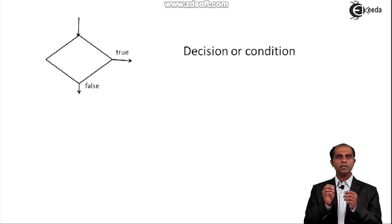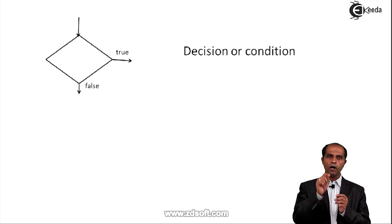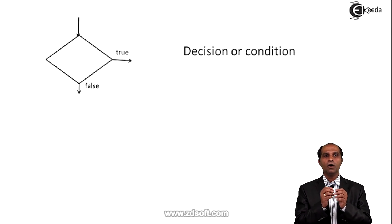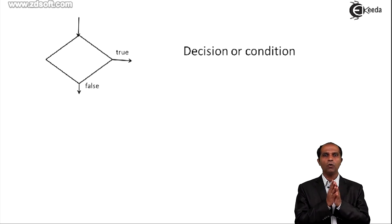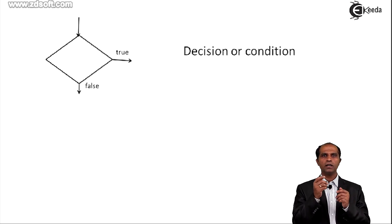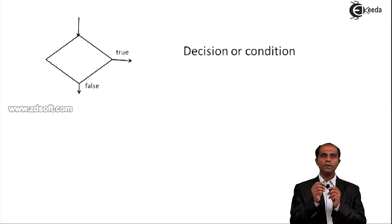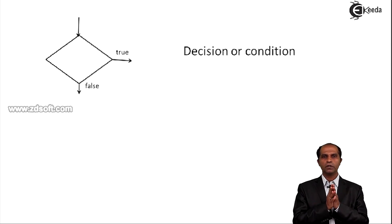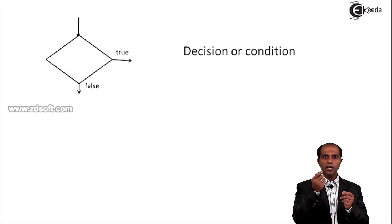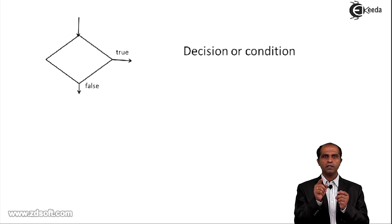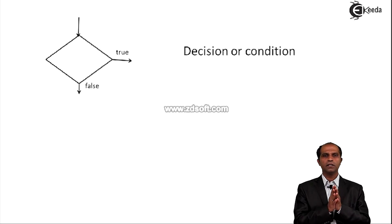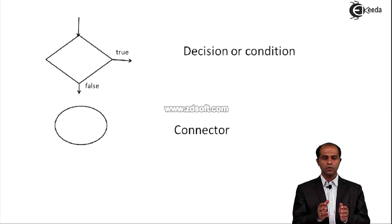The next symbol used in a flowchart is a rhombus. A rhombus is the only geometrical symbol that has one input and two outputs. It is used for decision or conditional statements. The two output arrows are marked as true and false. Whether the true path or false path is taken depends on the condition placed inside the box — you can write 'if' or 'check' inside it. If the condition is satisfied, it takes the true path; if not, it takes the false path.